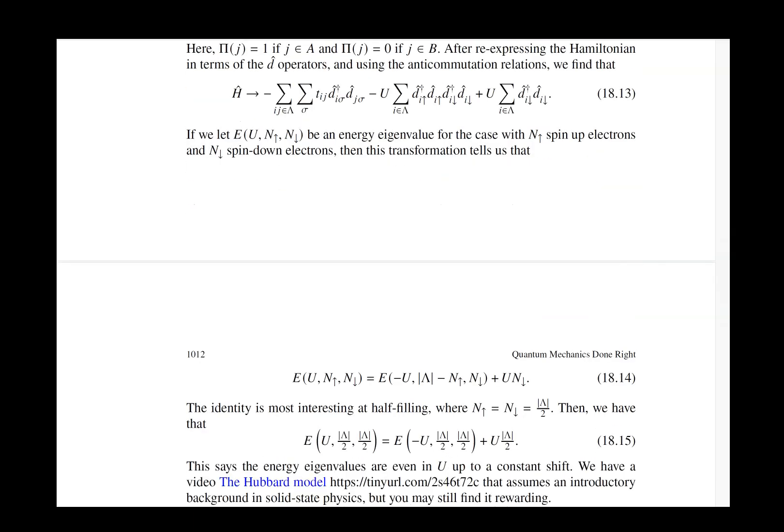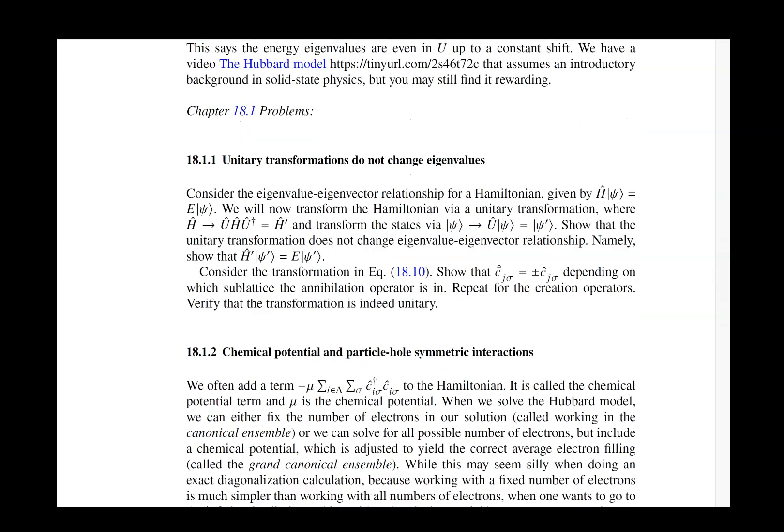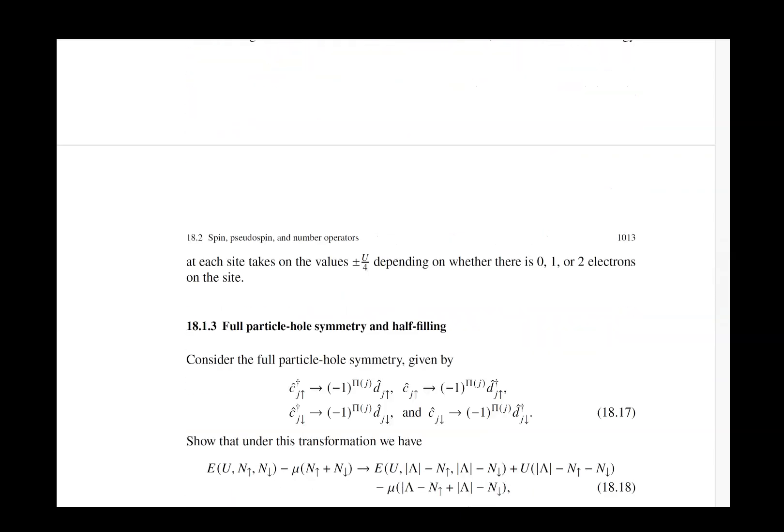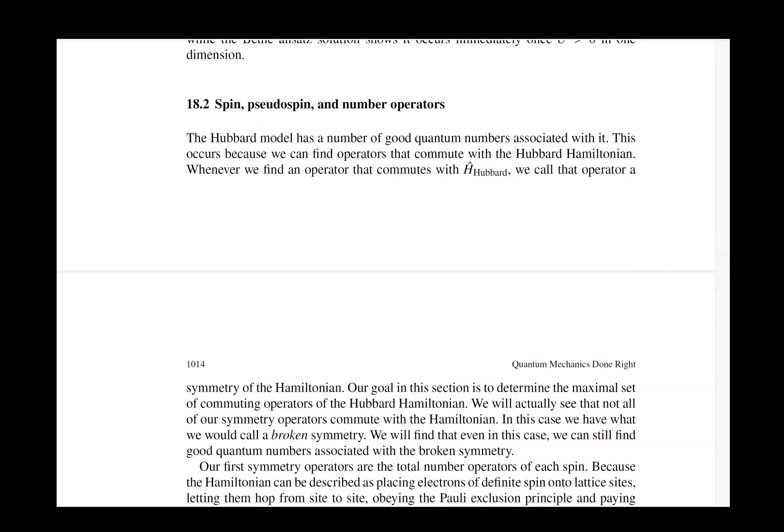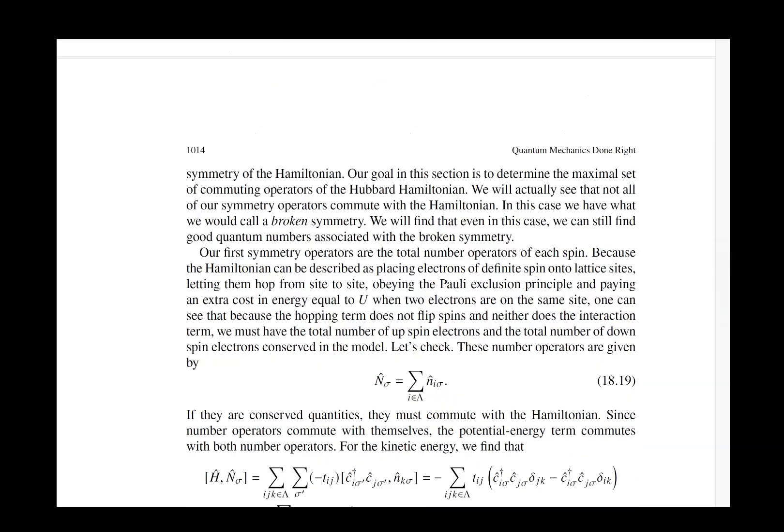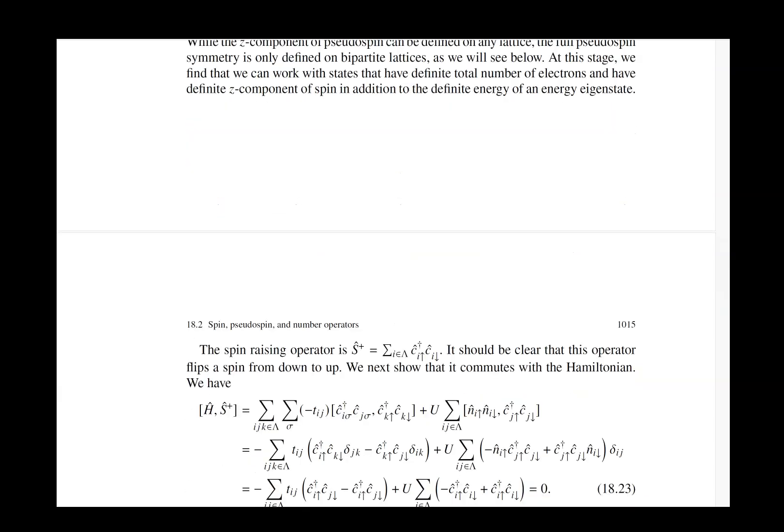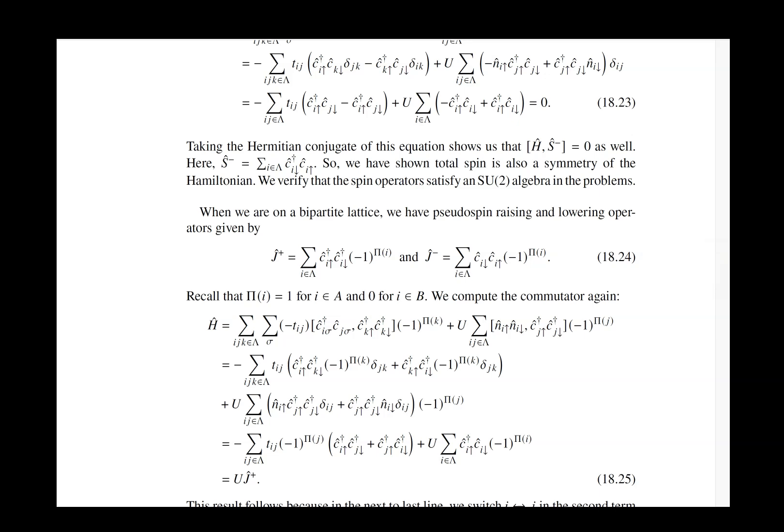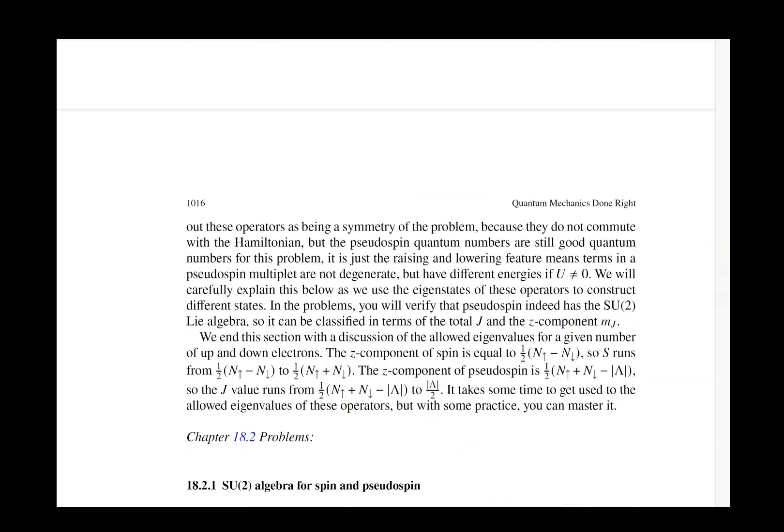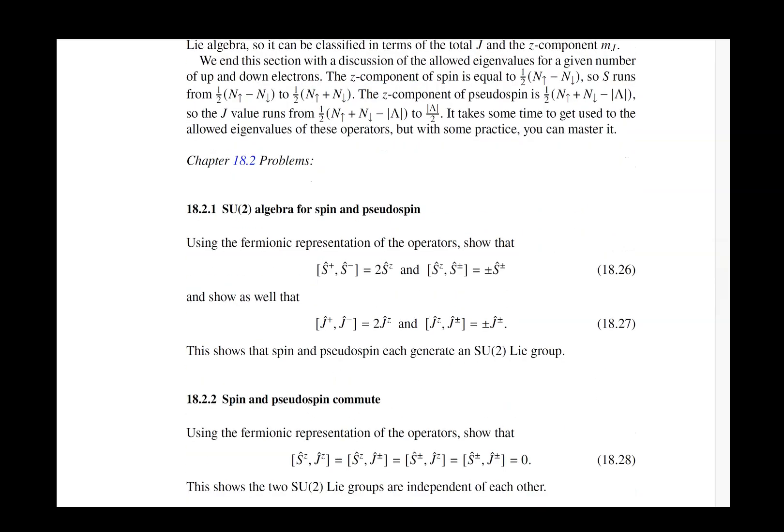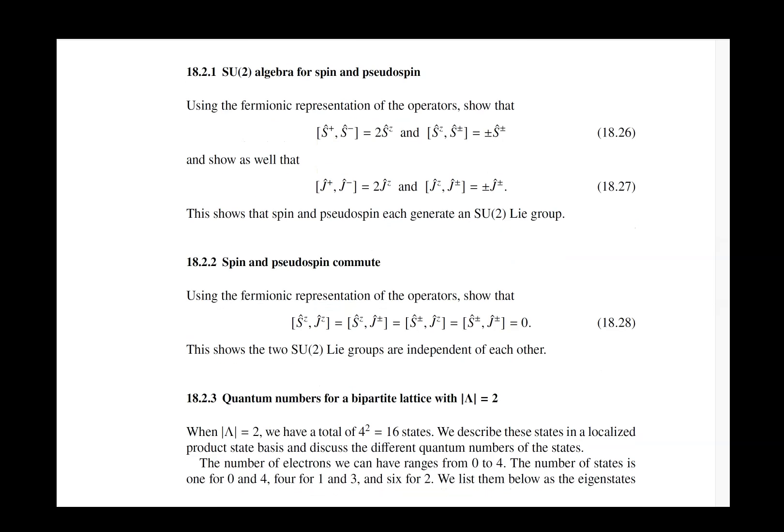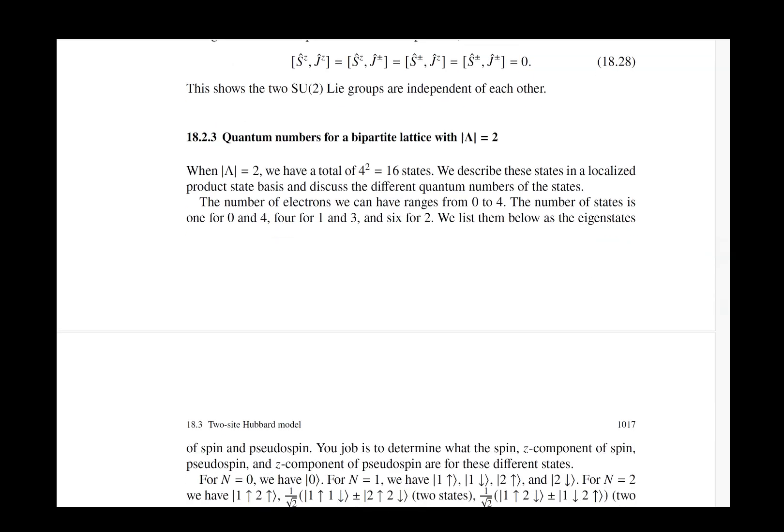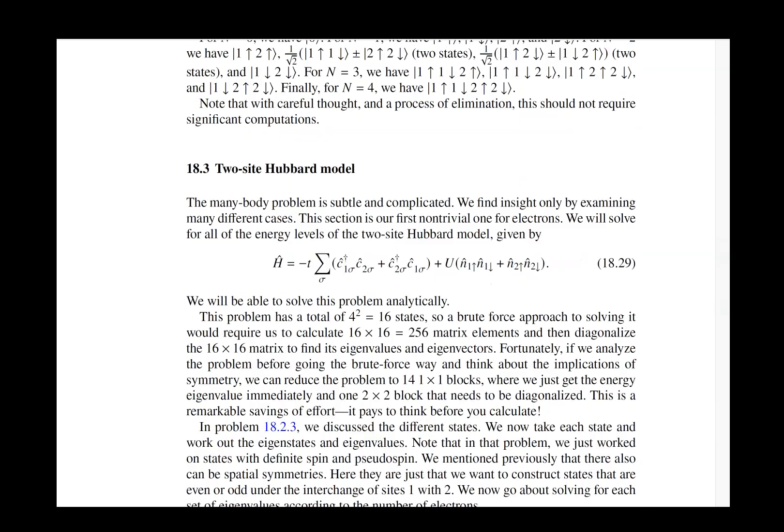We talk about the bipartite lattice, particle-hole symmetry and partial particle-hole symmetry, total spin, and something called pseudo-spin as well. A lot of this is operator gymnastics and commutators. You have to verify that certain operators commute with the Hamiltonian, and then those are good quantum numbers. With pseudo-spin, it doesn't exactly commute, but it acts like a raising or lowering operator, so you know what happens to the energies when you look at states that have been raised or lowered by the pseudo-spin raising and lowering operators.